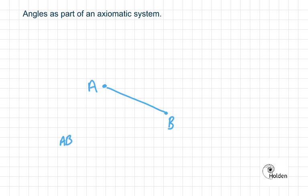We can then introduce a third point, point C. Now we have two lines: AB and AC.